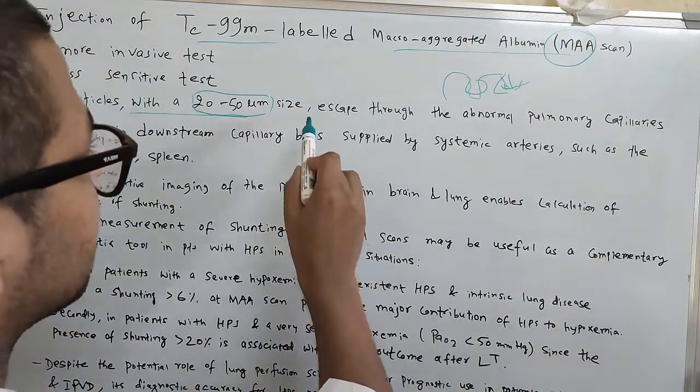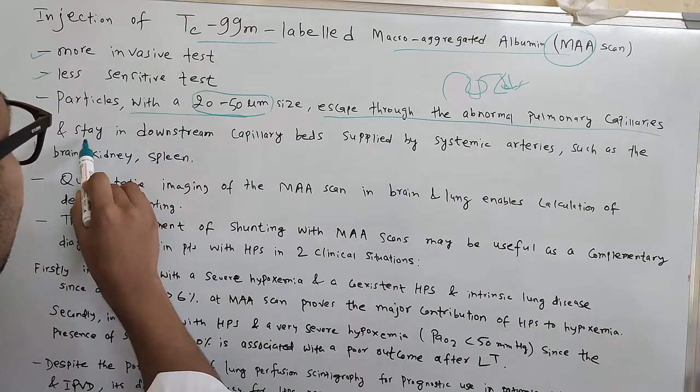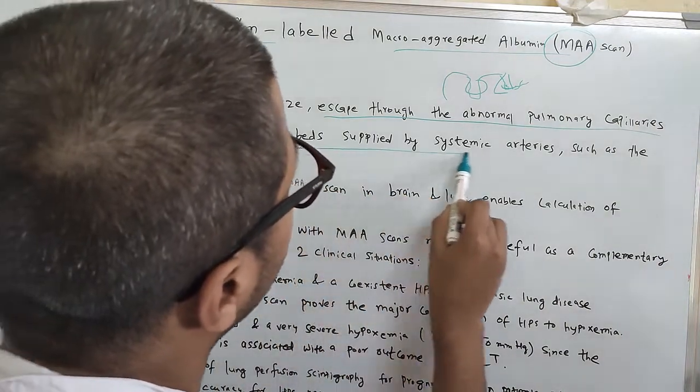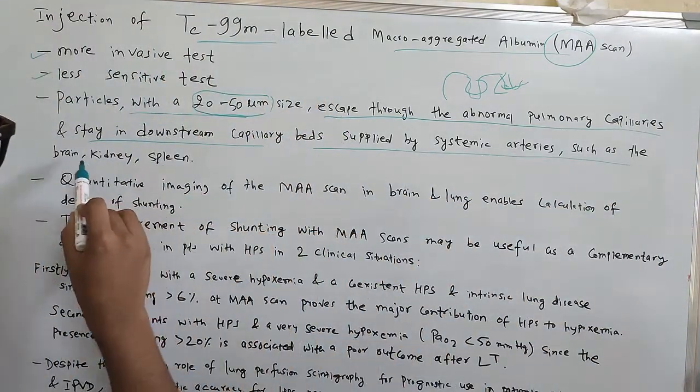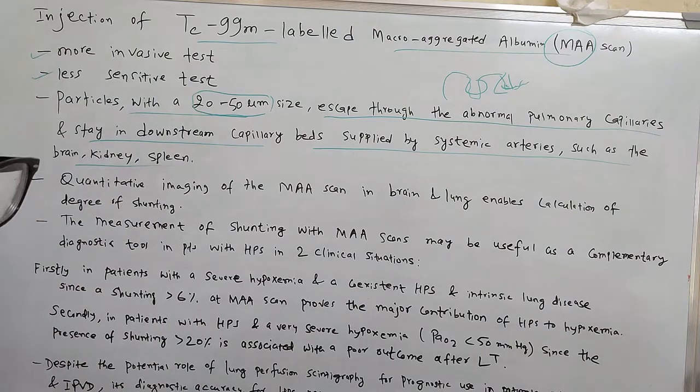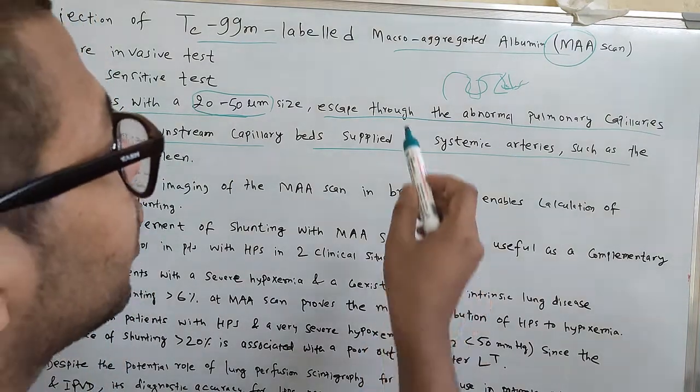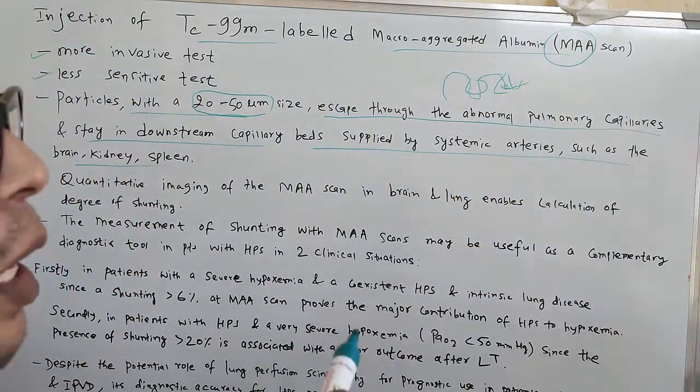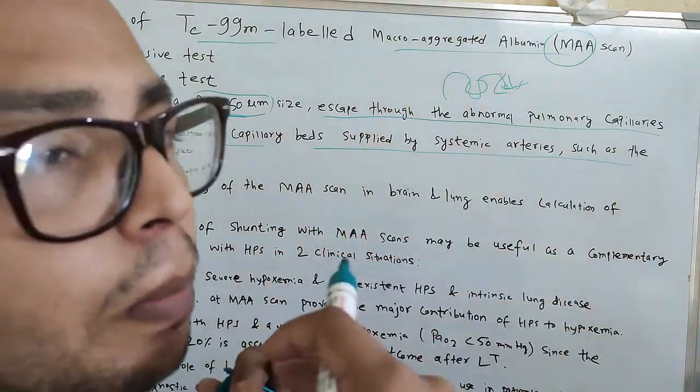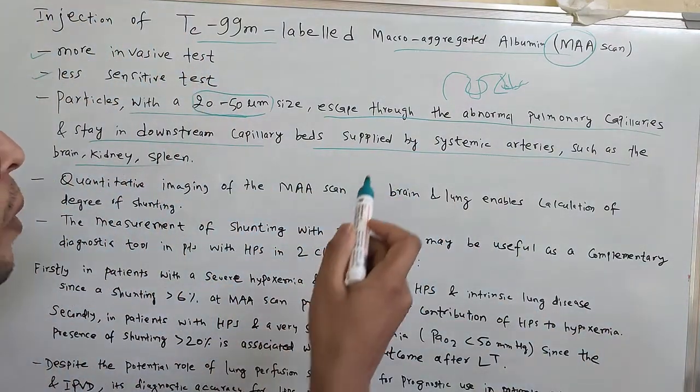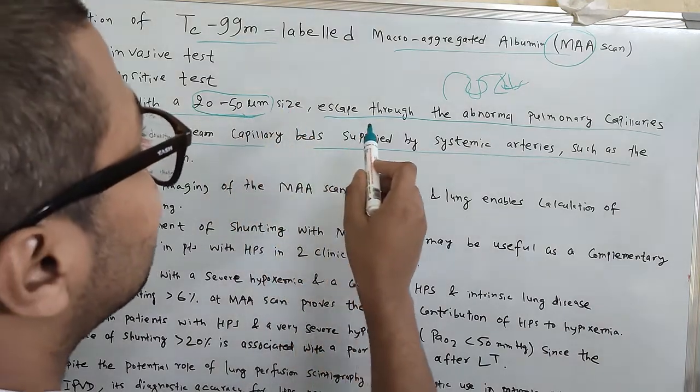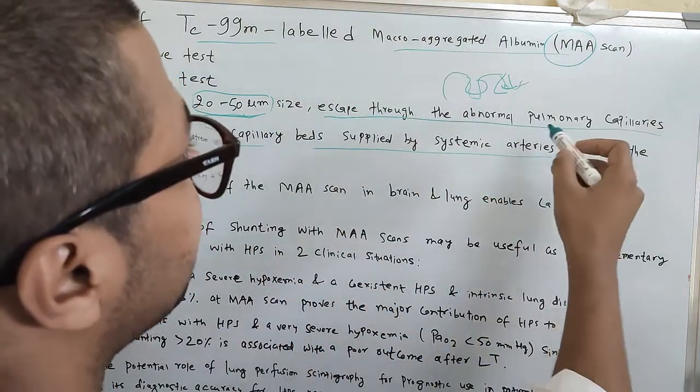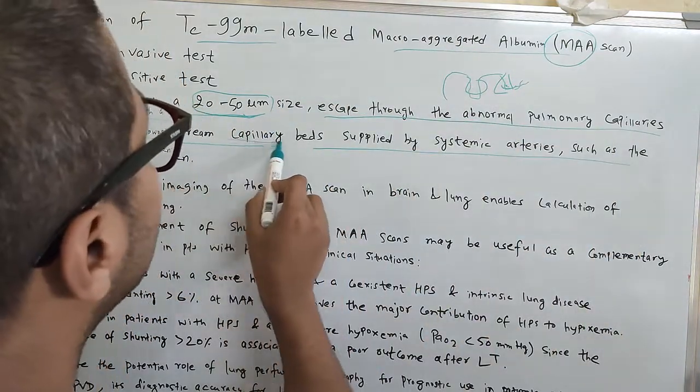Normally, these particles pass through the pulmonary capillaries and extend to downstream capillary bed supplied by systemic arteries such as the brain, kidney, and spleen. Normally these do not pass through the pulmonary capillaries, but due to abnormal pulmonary vascular dilatation in hepatopulmonary syndrome, these macro aggregated albumin particles pass through the pulmonary capillaries and stay downstream.